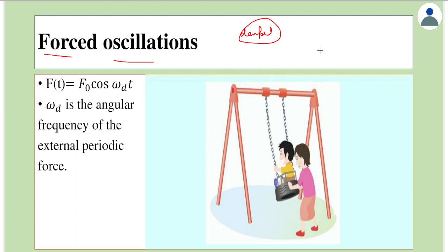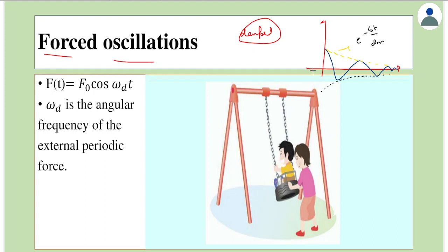We saw that in case of damped oscillations, the amplitude would decrease with time. The amplitude would decrease exponentially, of the form e to the minus bt over 2m. If we let it oscillate as it is, after some time the body would come to rest — that is, the body would stop oscillating.